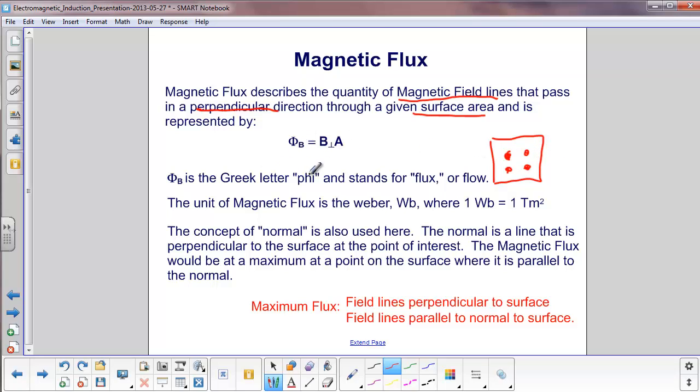Phi is the Greek letter phi, and it stands for flux or flow. The unit of magnetic flux is the Weber, and one Weber just equals one tesla meter squared.